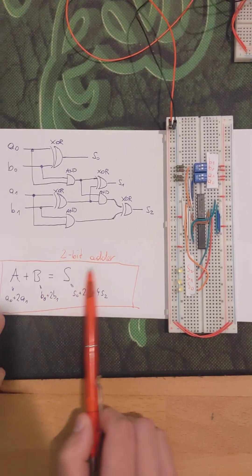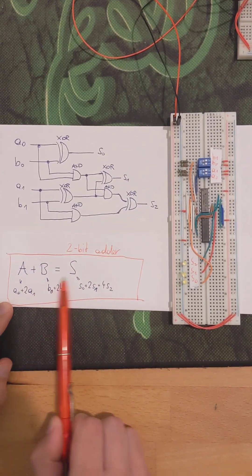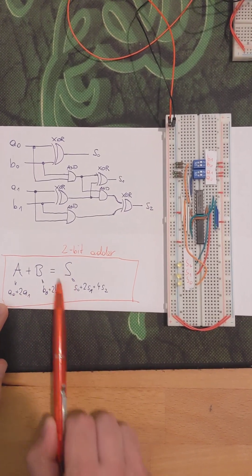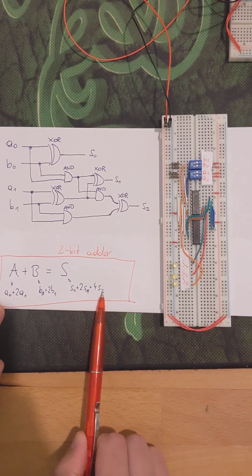This is a circuit for a 2-bit adder. As you see, you add two numbers, two 2-digit numbers A and B, and you get a result 3-digit number.